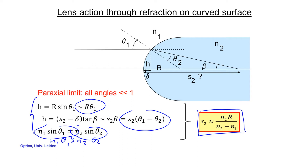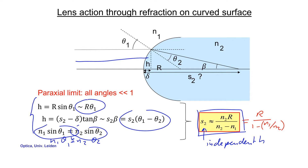There are two important things to notice about this result. First, the expression depends only on the ratio between the refractive indices, as expected. Second, the expression is independent of the height h of the ray hitting the surface. So all rays at all different heights cross the optical axis at the same point — you focus the light.